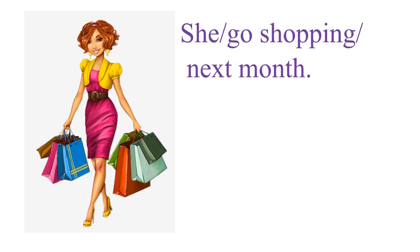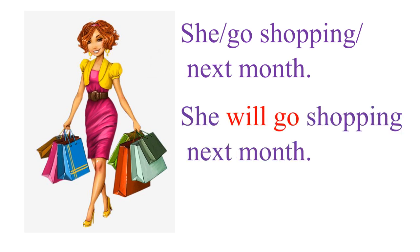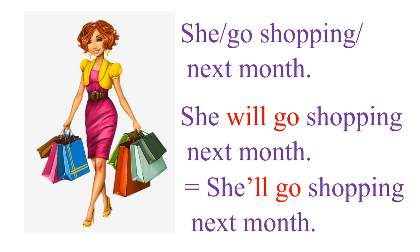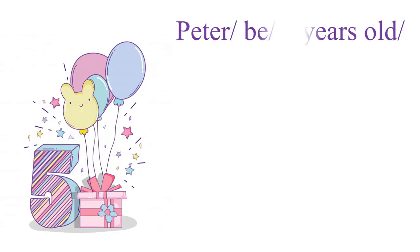Next example: this is a girl going shopping. The words are: 'she go shopping next month.' How do you make a sentence using the future tense? The sentence is: 'She will go shopping next month,' or 'She's going to go shopping next month.' You can use 'will go' or 'is going to go' — both are okay.